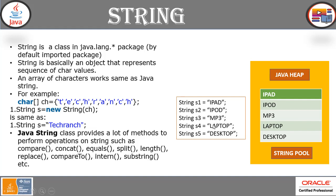For now, we need to understand how strings function in Java briefly. We have Java heap memory, and when we have a string variable, it goes through the Java heap and is assigned there. The string pool is basically where all kinds of string functions are performed directly in a memory location.